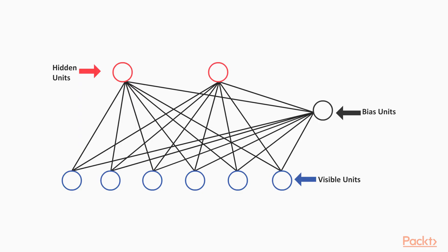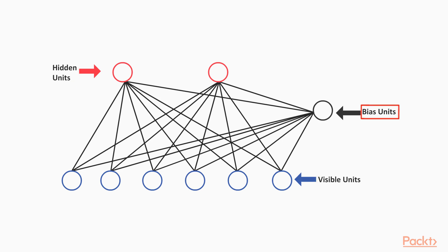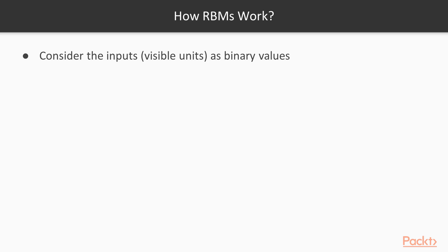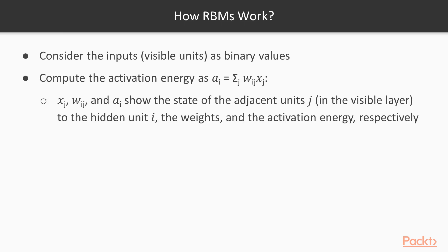Here you can see the simple structure of the RBM. They have two layers: the visible layer and the hidden layer, and they are fully connected. The visible units are translated to the hidden units, and the backward process is also possible. There is also a bias unit which is connected to all visible and hidden units. So here's how RBMs work: consider the inputs, or visible units, as binary values — zeros or ones — and compute the activation energy a_i, in which x_j, w_ij, and a_i show the state of the adjacent units j in the visible layer to the hidden unit i, the weights, and the activation energy respectively.